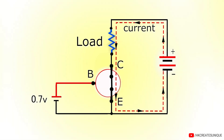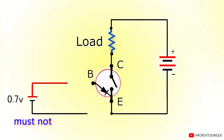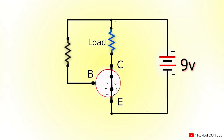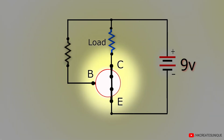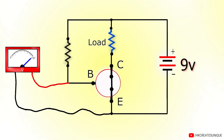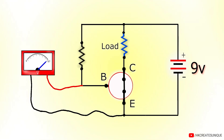The base-to-emitter junction is just like a PN junction diode, so the base-to-emitter voltage must not exceed 0.7 volts. For that reason, to turn the transistor on using a voltage such as 9 volts, a resistor must be connected in series to limit current. This way, the transistor turns on and the voltage between base and emitter remains around 0.7 volts.